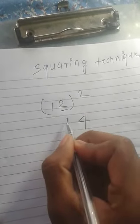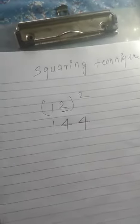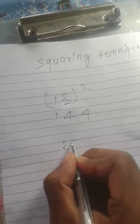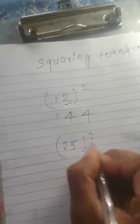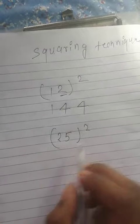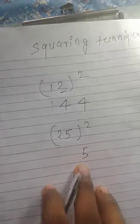I'm going to give you another example: 25. First of all, you have to do the square of 5. Square of 5 is 25. We write 5 and have a carry of 2.